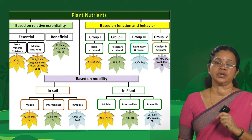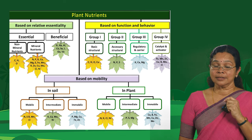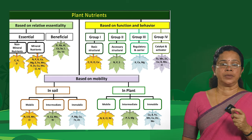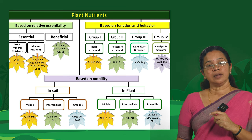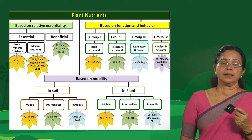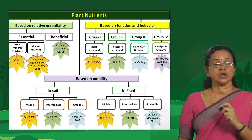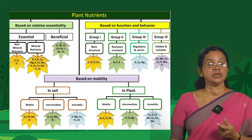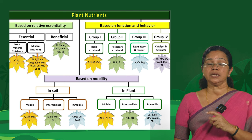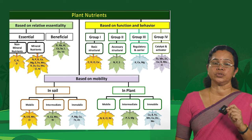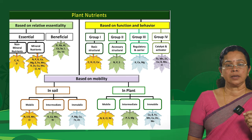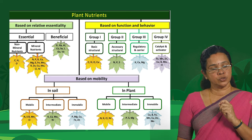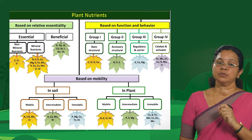A third type of classification is based on mobility — that is, how these nutrients move, either in the soil or inside the plant. Based on mobility in soil, we have elements that are highly mobile, those with intermediate mobility, and immobile nutrients. Within the plant, the same three categories exist: mobile, those with intermediate mobility, and immobile nutrients.